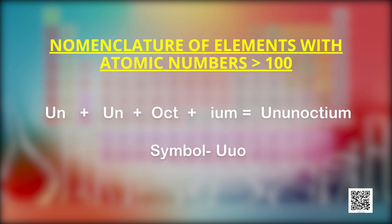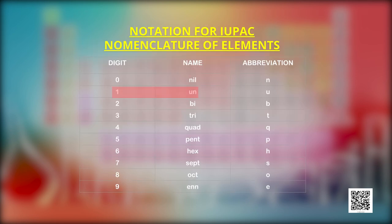For example, an element with atomic number 118 should be named as ununoctium — from 1 equals 'un', 8 equals 'oct', and '-ium'. The first letters form the temporary symbol 'Uuo'. After the discovery of a new element, its permanent name and symbol are given by a vote of IUPAC representatives from each country. The permanent name might reflect the country or state in which the element was discovered, or pay tribute to a notable scientist.